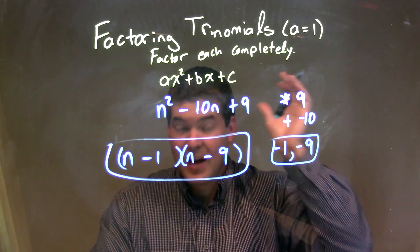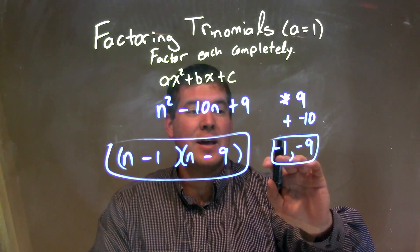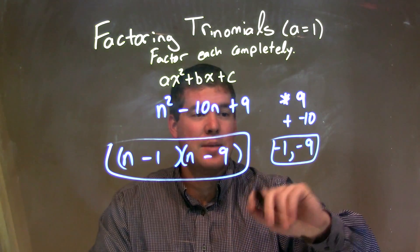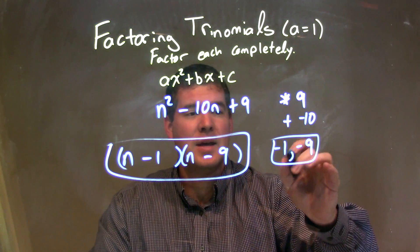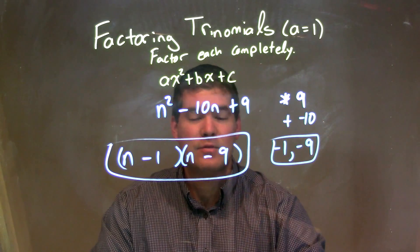Well, in that case, the two numbers would be negative 1 and a negative 9. Negative 1 times negative 9 is a positive 9, and negative 1 plus negative 9 is a negative 10.